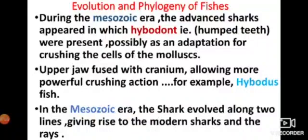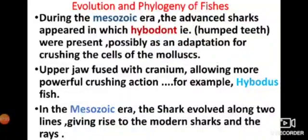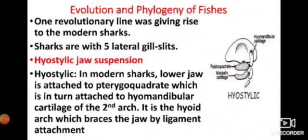In the Mesozoic era, sharks evolved along two evolutionary lines. From these two lines, two groups of cartilaginous fishes evolved which are known today. The first evolutionary line gave rise to the sharks, evolving from one line of evolution.